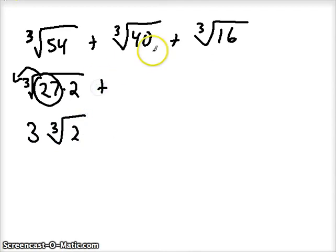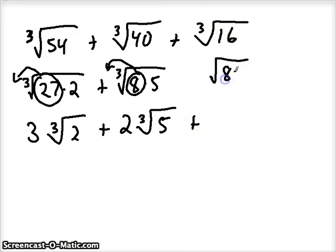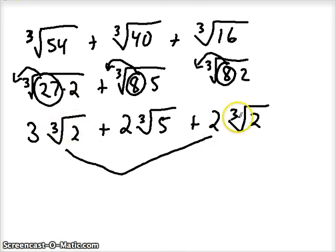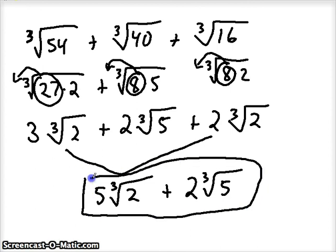For 40: 8 is a perfect cube and a factor of 40. 8 times 5 equals 40, so cube root of 8 comes out as 2, leaving the cube root of 5. For 16: 8 times 2 equals 16, so cube root of 8 comes out as 2, leaving the cube root of 2. Now we can only combine like terms: the cube root of 54 gave 3 times cube root of 2, and the cube root of 16 gave 2 times cube root of 2. Adding those: 3 plus 2 is 5, giving 5 cube roots of 2. The cube root of 40 simplified to 2 cube roots of 5, which can't be combined. Final answer: 5 cube roots of 2 plus 2 cube roots of 5.